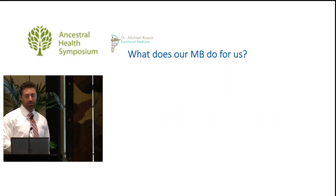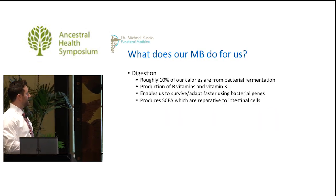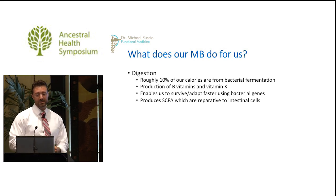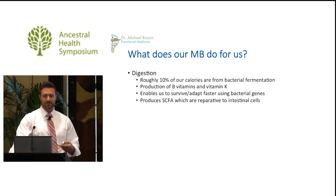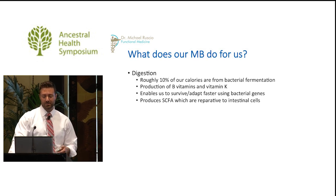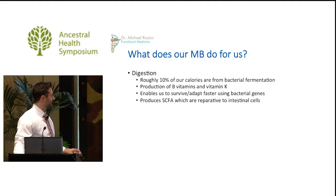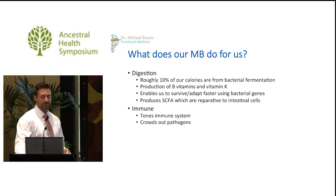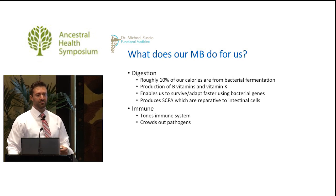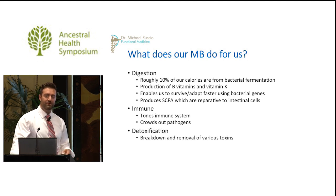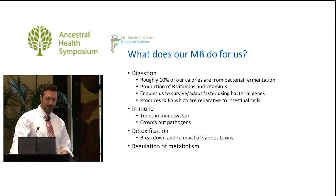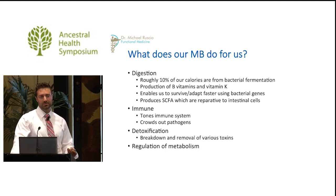The microbiota does a number of things for us. Digestion—roughly 10% of our calories come from bacterial fermentation. Production of B vitamins and K vitamins. It enables us to survive and adapt faster using bacterial genes. We also see production of short-chain fatty acids, which are reparative to intestinal cells. There is also toning of the immune system and the ability to crowd out pathogens from infecting the GI tract. Detoxification—breakdown and removal of various toxins—is also assisted by the gut microbiota, along with partial regulation of metabolism.